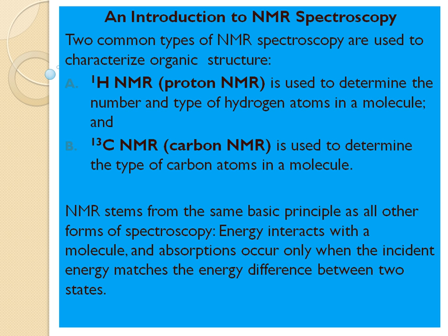Proton NMR is used to determine the number and types of hydrogen atoms in a molecule. The second type of NMR spectroscopy is C13 NMR, or carbon NMR spectroscopy, which is used to determine the types of carbon atoms in a molecule.